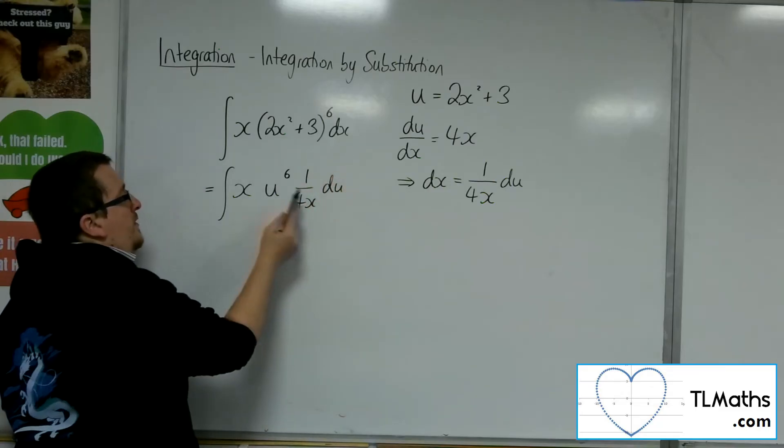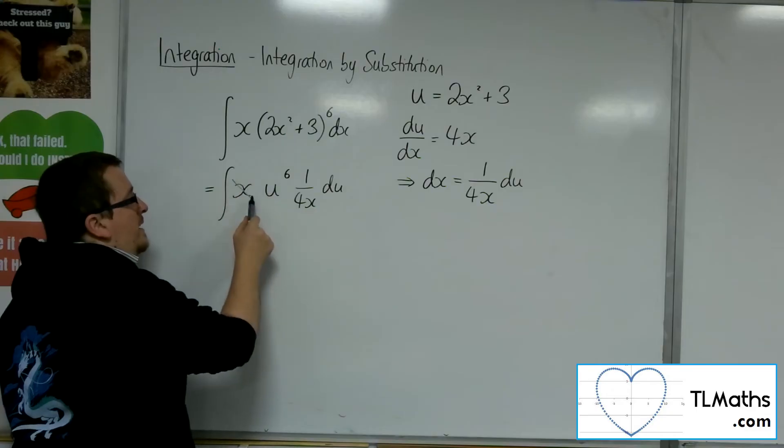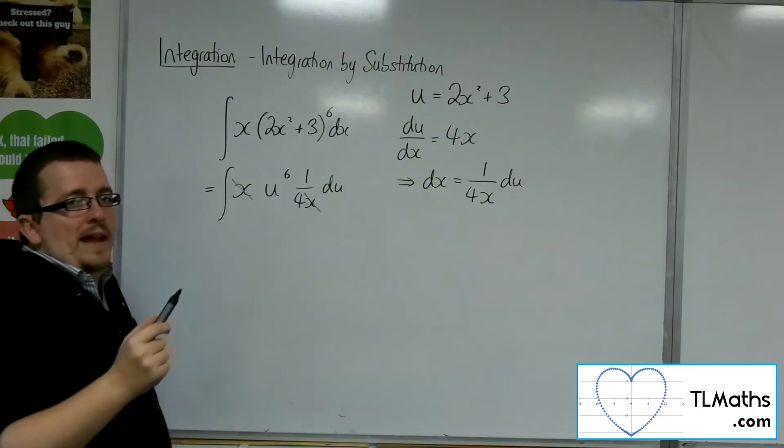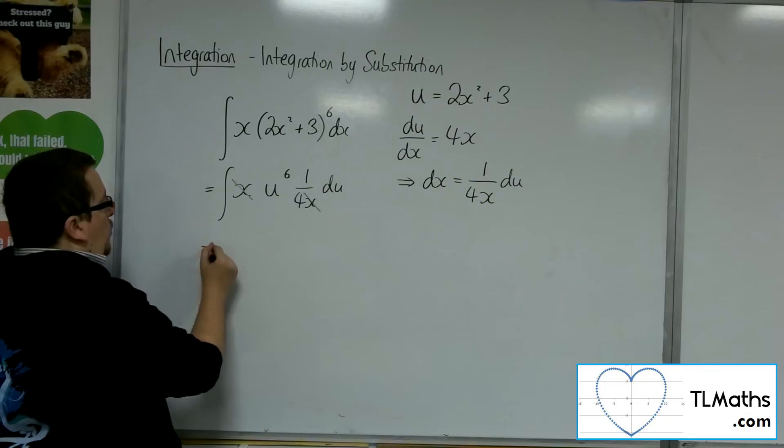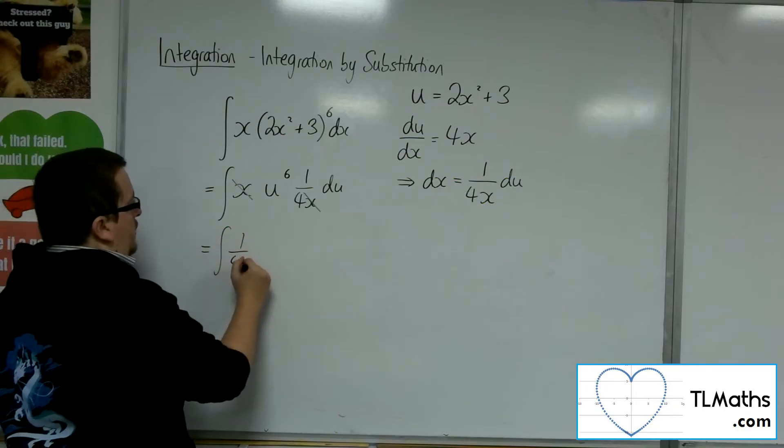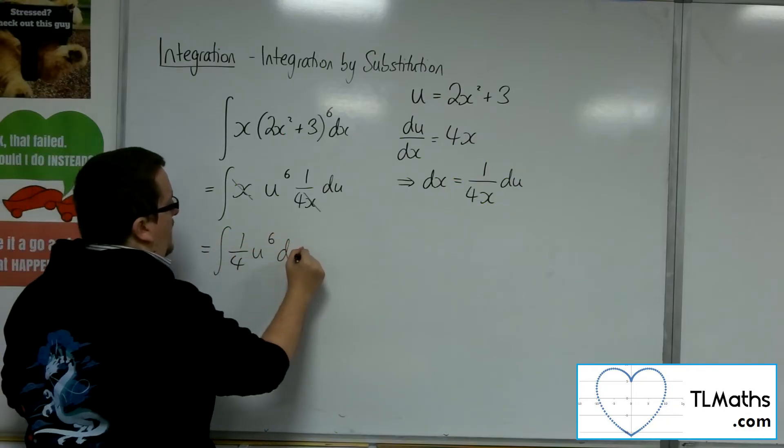So you can see here that the x that we have here cancels with the x that we have there. And so this is 1 quarter u to the 6 du that I'm integrating.